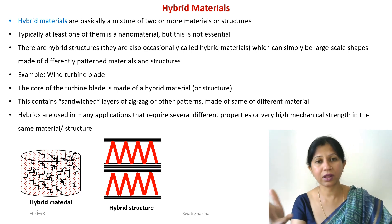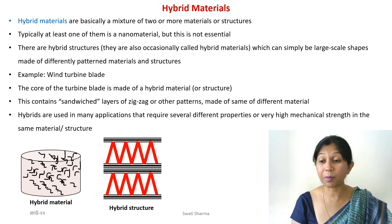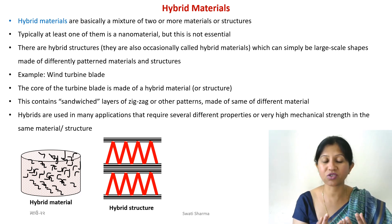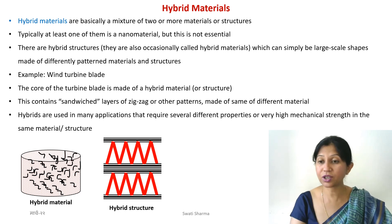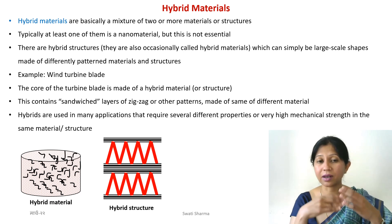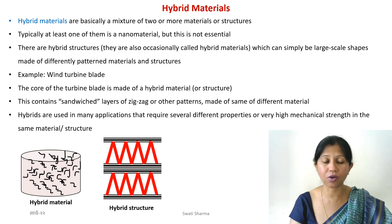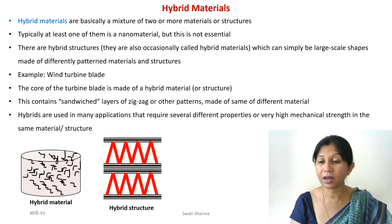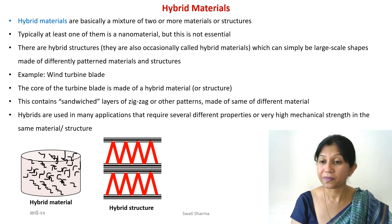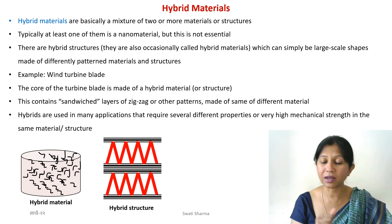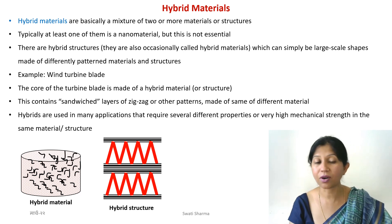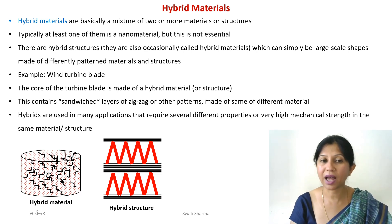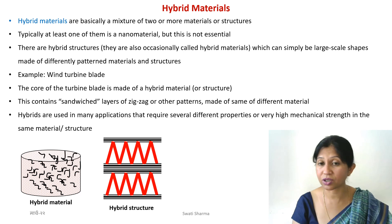The core of these structures can be made of something sandwiched — a zigzag or vertical structure — to provide better mechanical support. These kinds of ultra-lightweight yet strong materials and structures are known as hybrid materials or hybrid structures nowadays.